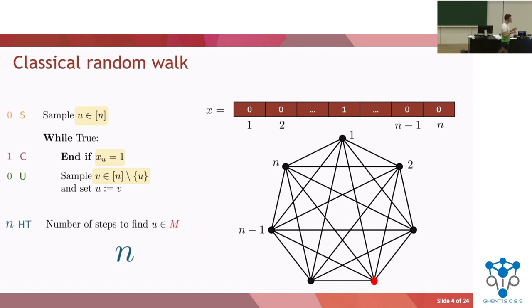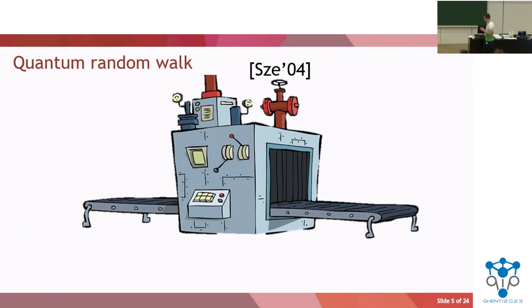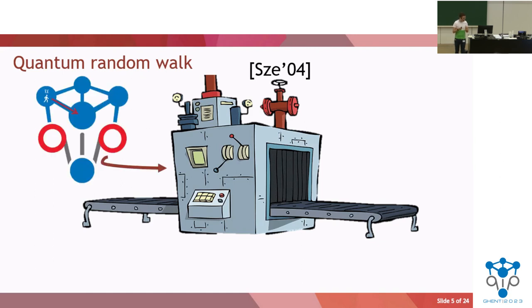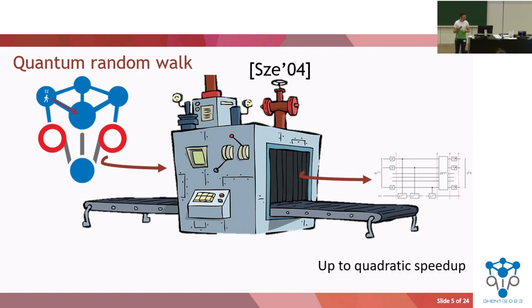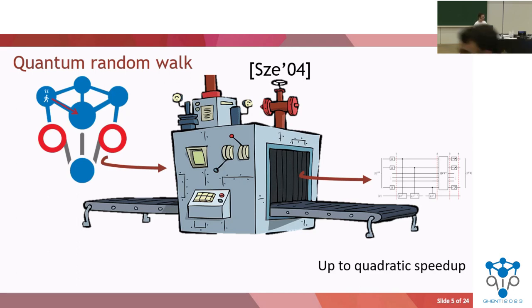What if we want to move to the quantum setting — can we keep this intuition? Luckily, Szegedy came up with a wonderful machine that allows you to start with a classical random walk, run it through this compiler, and end up with a quantum algorithm. This quantum algorithm can achieve up to a quadratic speedup compared to the classical random walk. This is great because it allows you to create a quantum algorithm without knowing what the machine does — the difficulty lies in designing the random walk, which involves mostly discrete and combinatorial math arguments.